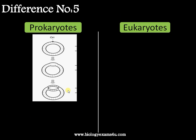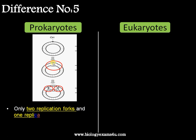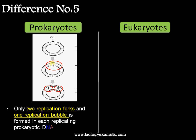Difference number five is regarding the formation of the replication fork. The replication fork is formed as a result of unwinding of the DNA strand by the helicase enzyme. In prokaryotes, since DNA replication is bidirectional, there are two replication forks and a single replication bubble — this structure is called a replication bubble.